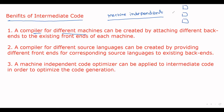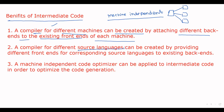Based on this machine independence, a compiler for different machines can be created by attaching different back ends. Suppose you have a different set of machines — we can generate one compiler by attaching different back ends for those different machines to the existing front ends.